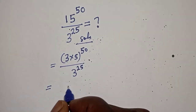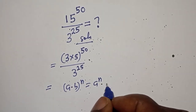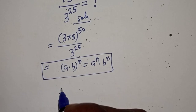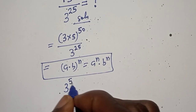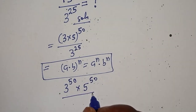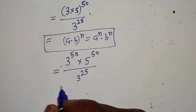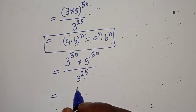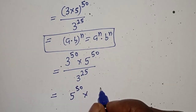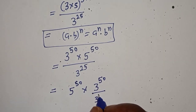If you have a multiplied by b to the power of n, this is equal to a raised to power n multiplied by b raised to power n. So we have 3 raised to power 50 multiplied by 5 raised to power 50, over 3 raised to power 25.